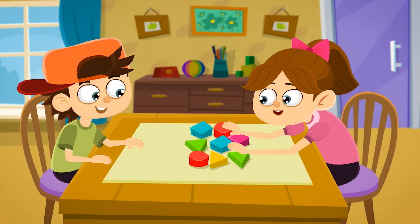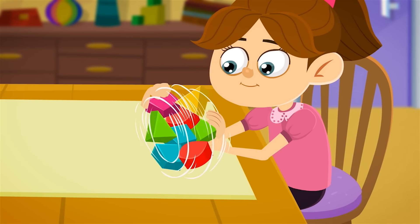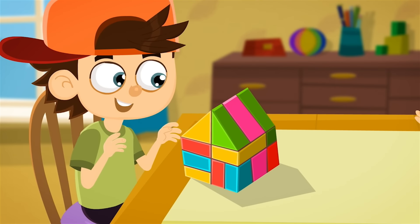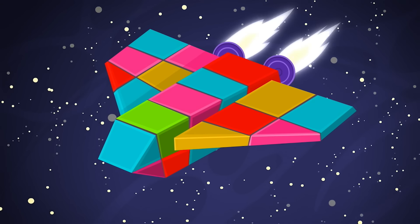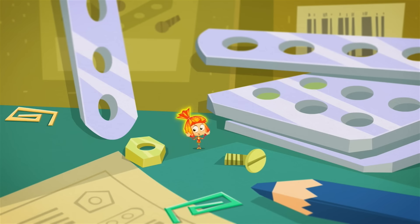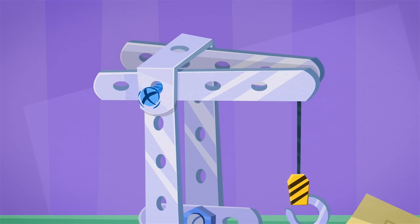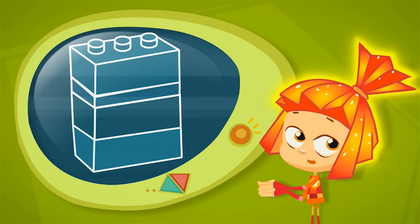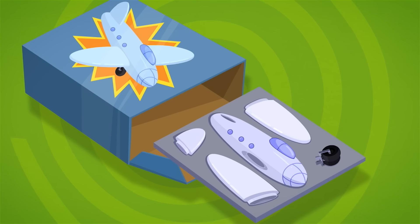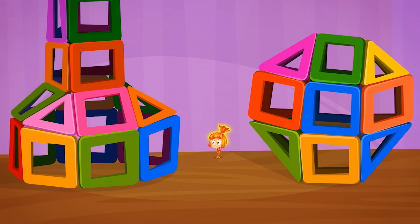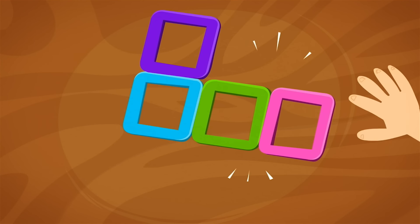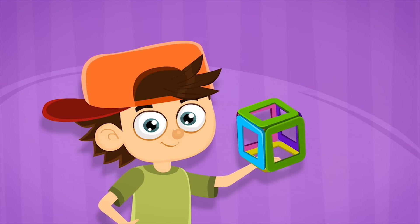A construction set lets you build lots of different things from a set of parts. Put them together like this, you've got a house. Like this, a car. Or like this, a spaceship. The parts might be made of metal and connected with screws. Some construction sets have plastic parts you click together. Other sets are models where the pieces are glued together. You can also find magnetic sets. Touch the parts together and magnetic attraction makes them stick.